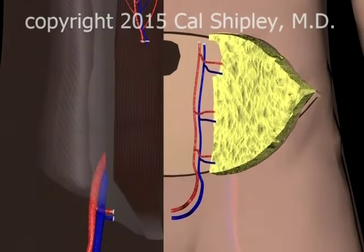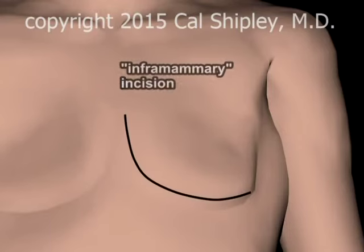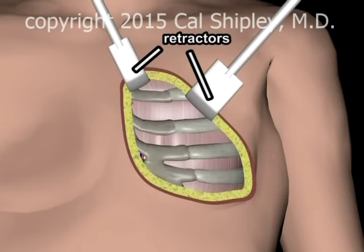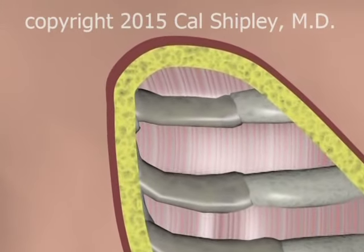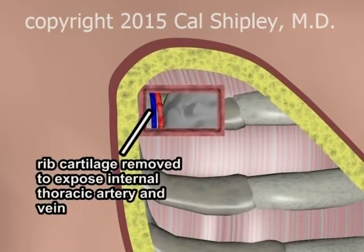The skin island, with its vascular structures, is now completely free of any attachments and may be moved up to the chest for reattachment. An inframammary incision is made in the area of the previous mastectomy, and the chest wall is exposed. An opening is made in the chest wall in order to expose the internal thoracic artery and vein.